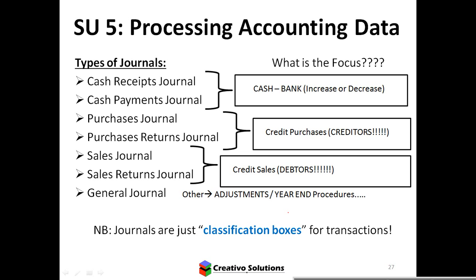The general journal is for other transactions and adjustments — things like prepaid and accrued entries. You start with the trial balance, which gets used for creating financial statements. The trial balance checks that debits are equal to credits, and once you confirm debits equal credits, you can draw up the statements because they will then be accurate.